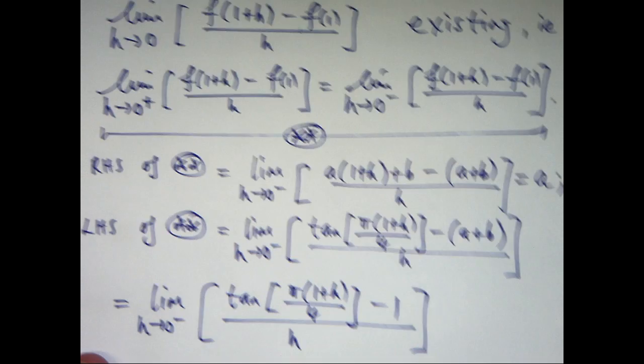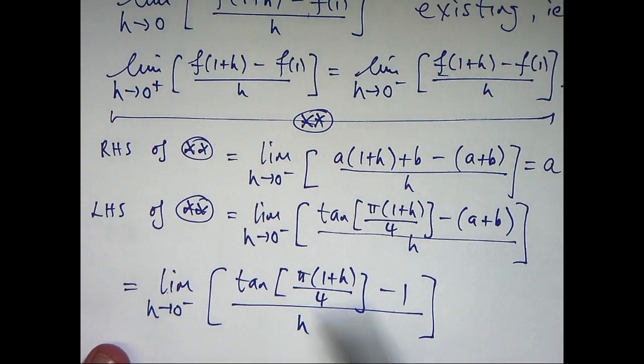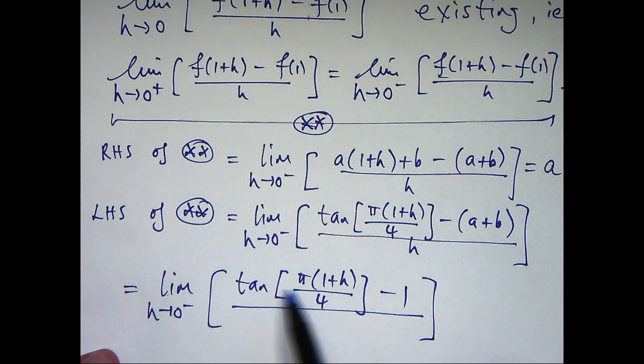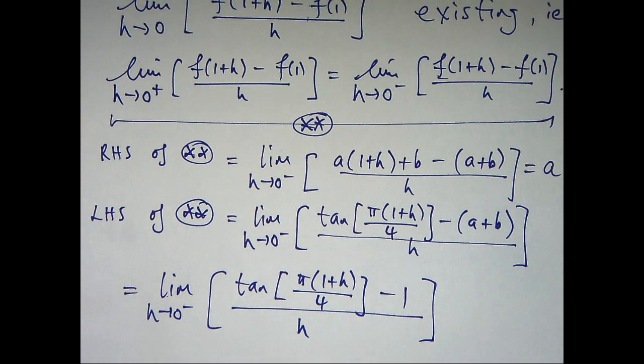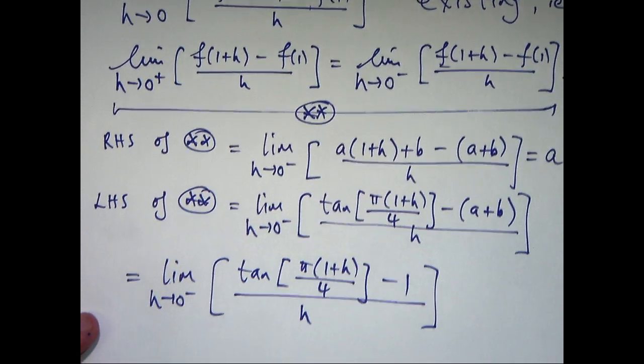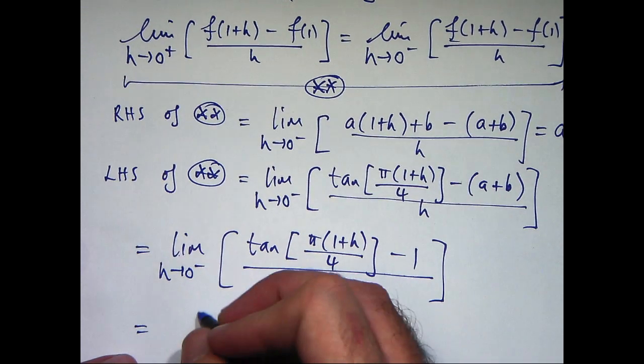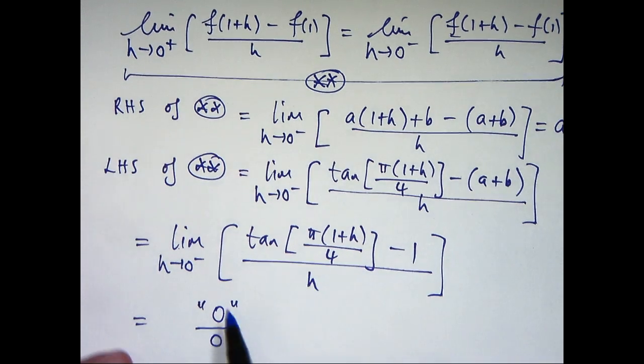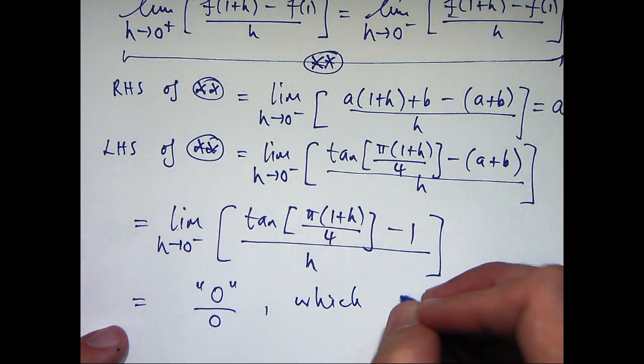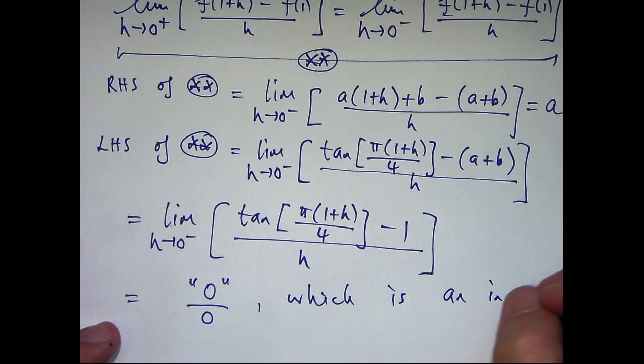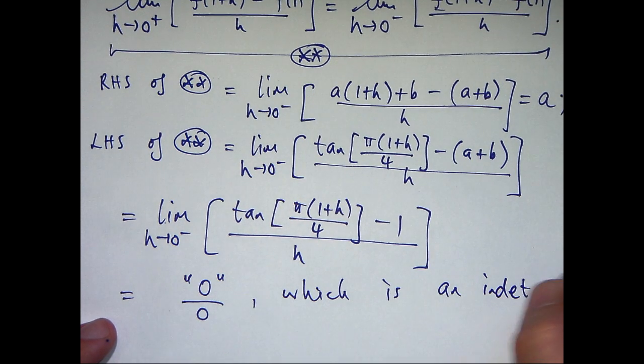Now, if I naively try to take the limit top and bottom, this will give me tan of pi on 4, which is 1, so I'll get 1 minus 1 on the top, which is 0. And I'll get 0 on the bottom. 0 over 0 is an indeterminate form. So, what I can do, hopefully, is apply L'Hôpital's rule and that will then give me an answer for my limit. So, I'm going to abuse the notation here and write 0 over 0, which is an indeterminate form.